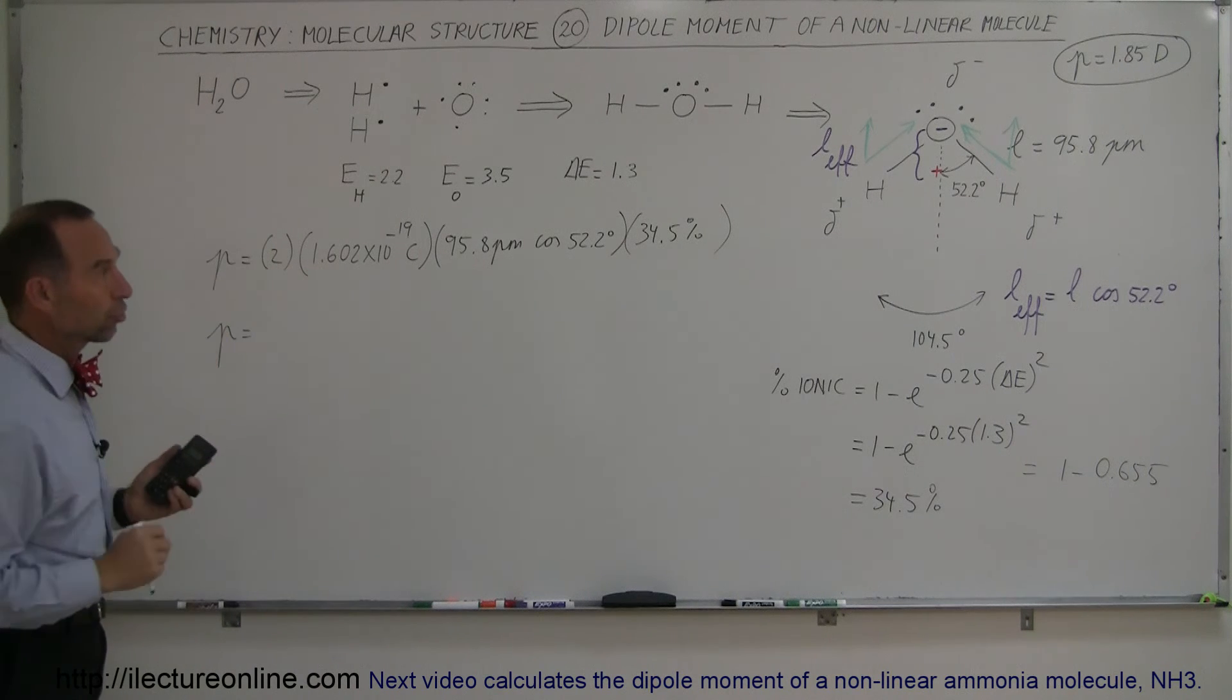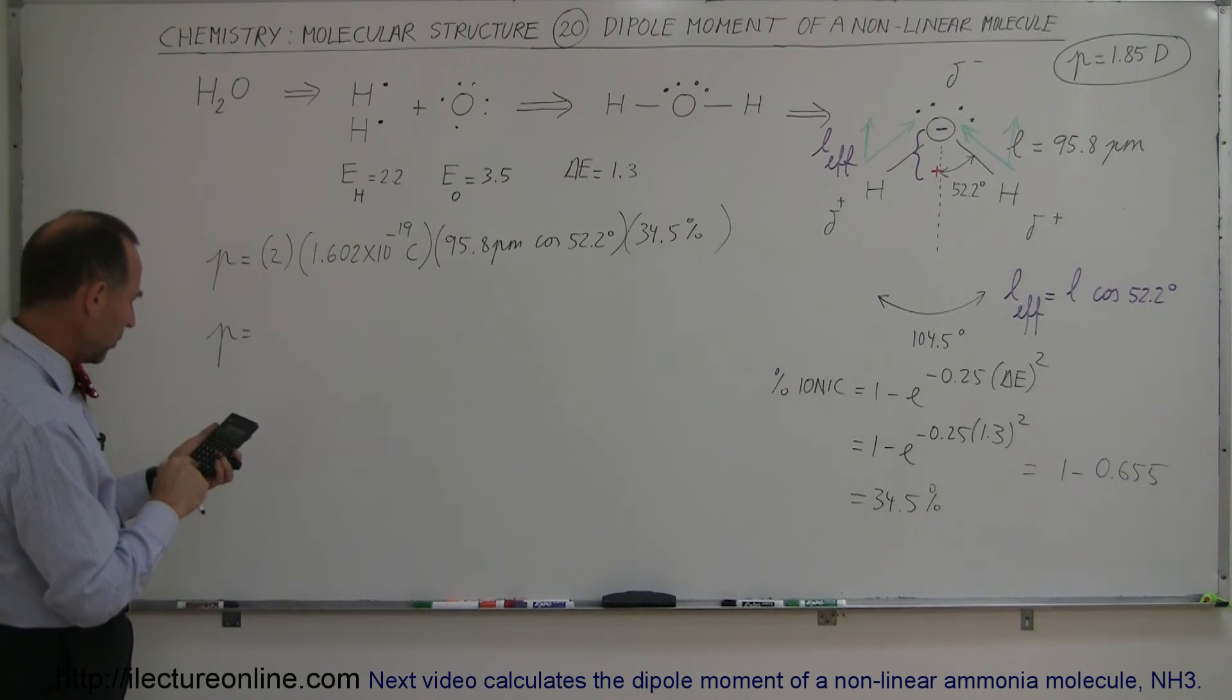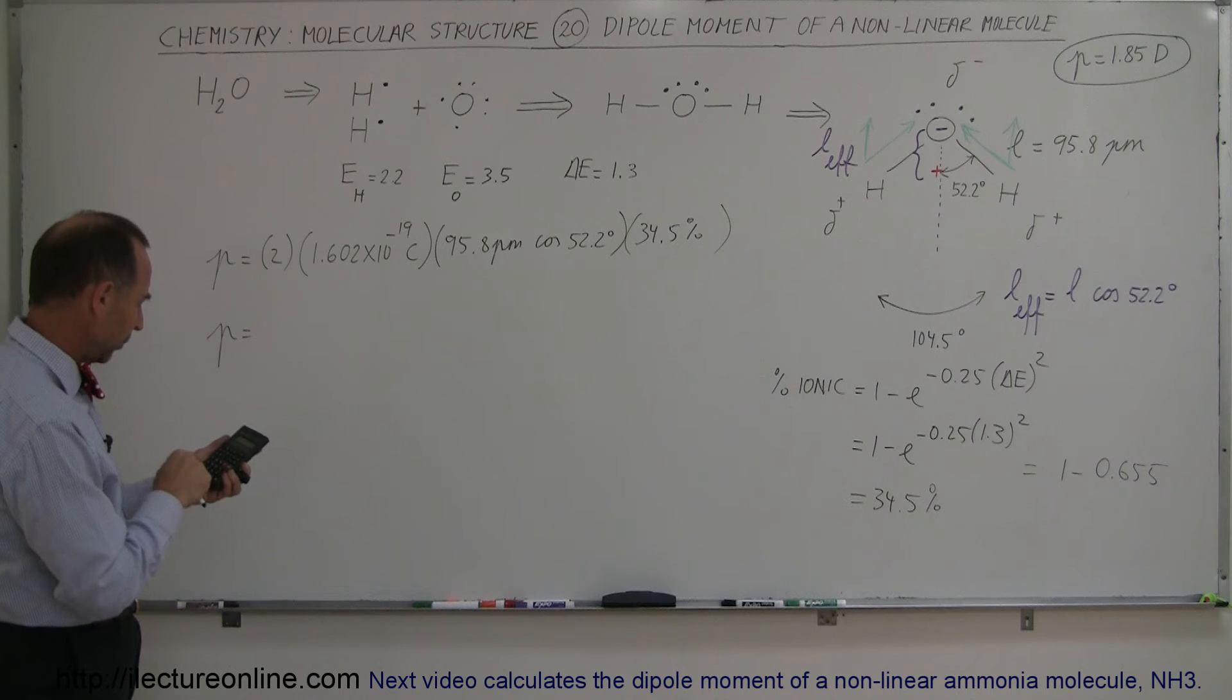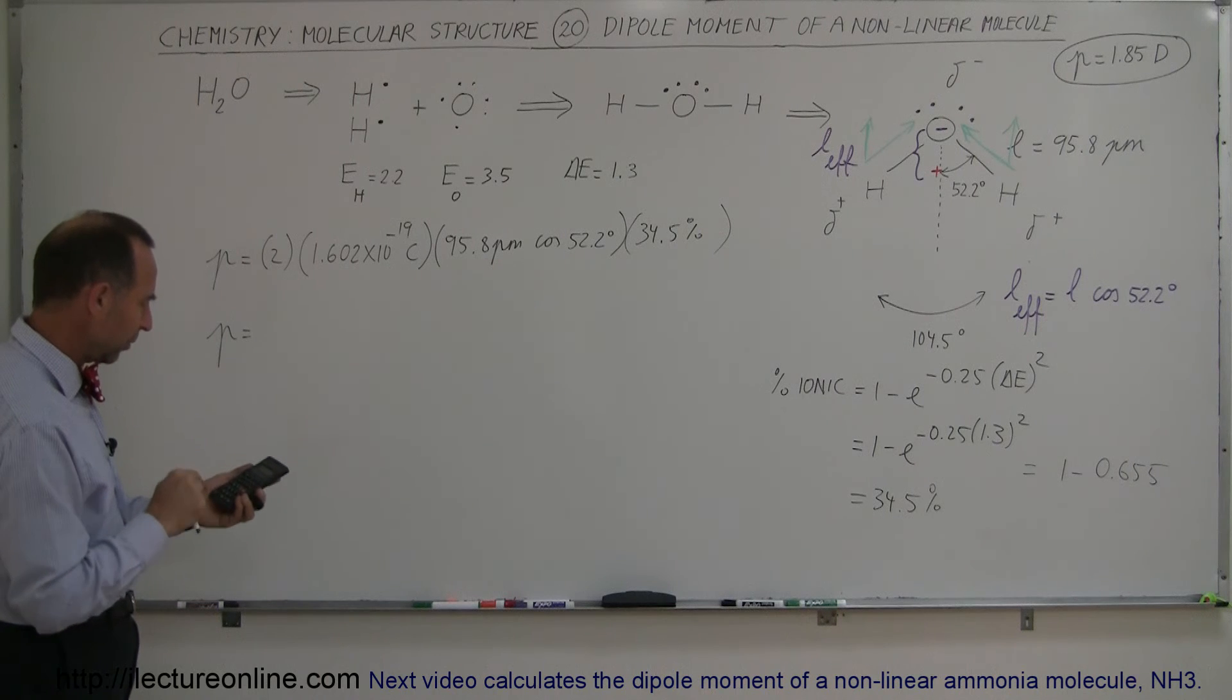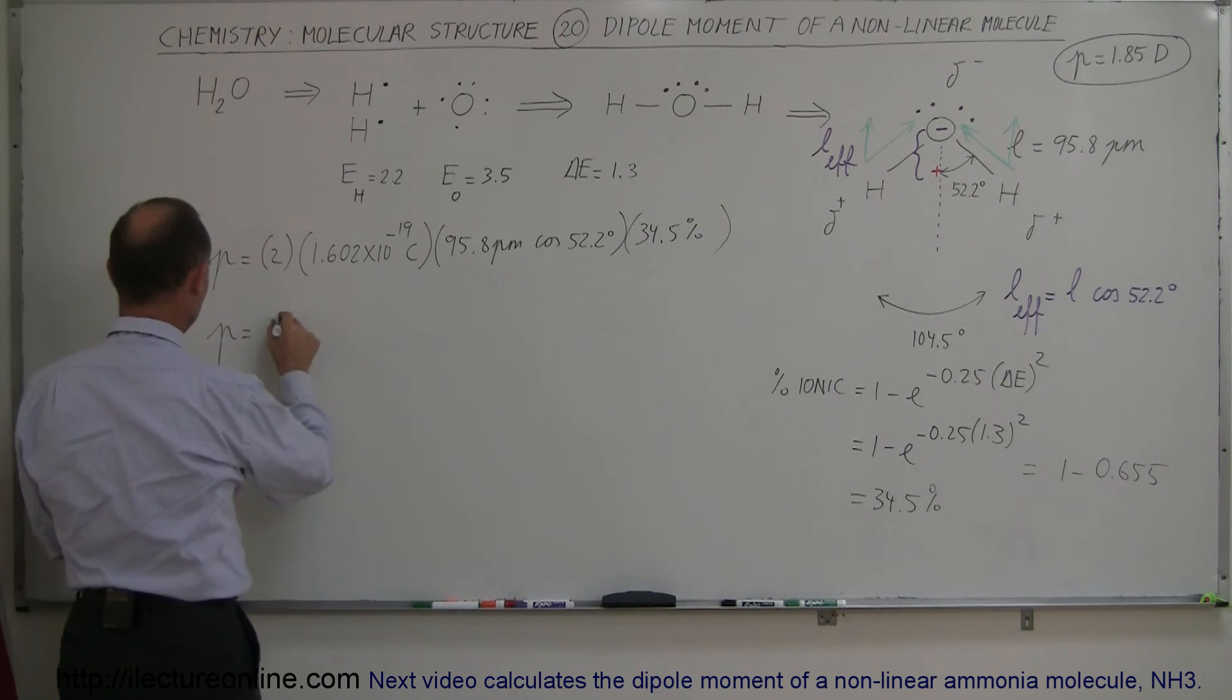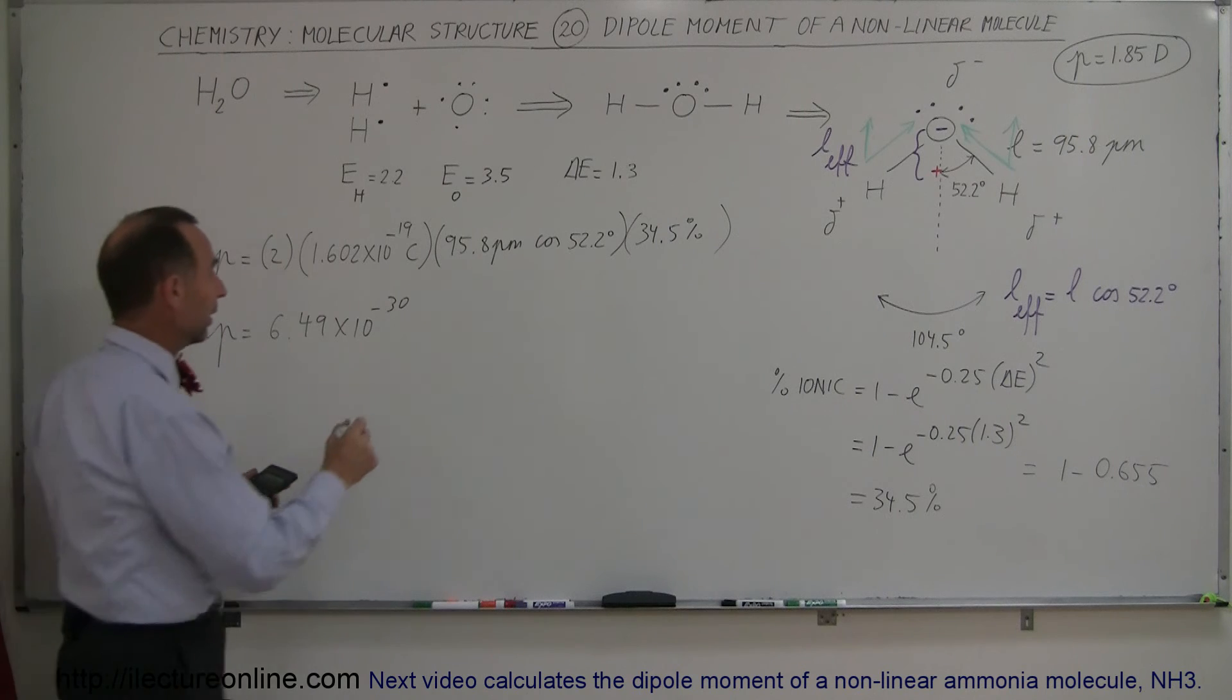Again, ignoring the electron charges there, the free electrons next to the oxygen. So we have 2 times 1.602 e to the minus 19 times 95.8 e to the minus 12 times cosine of 52.2 degrees, take the cosine of that, times 0.345 equals, and I get 6.49 times 10 to the minus 30. Now when I go ahead and convert it to debyes.